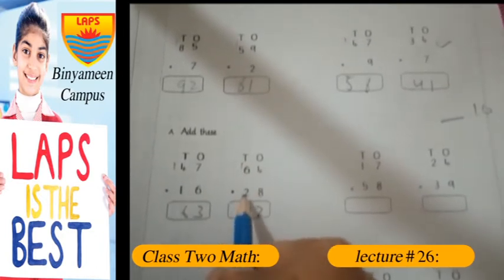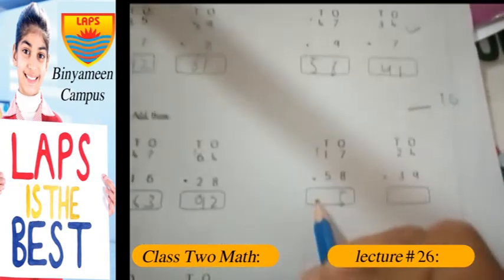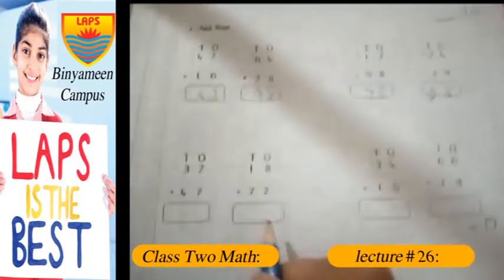6 and 1 makes 7. 7 and 2 makes 9. 7 and 8 makes 15. 1 carry here. 2 and 5 makes 7. 9 and 4, 13. 1 carry here. Now 1 and 2 makes 3. 3 and 3 makes 6. 63.